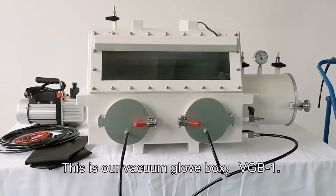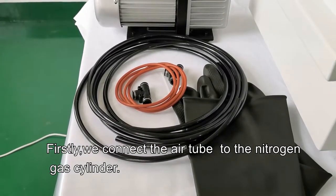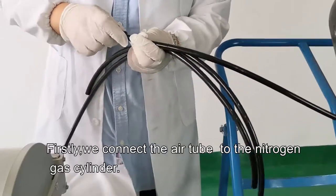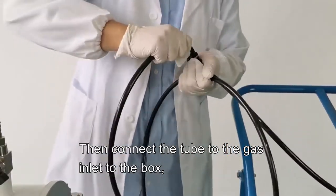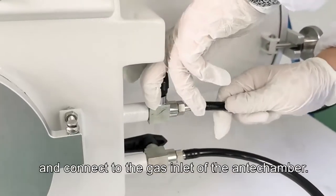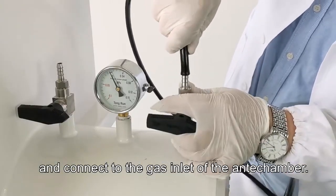This is our vacuum glove box VGB1. Firstly, we connect the air tube to the nitrogen gas cylinder. Then connect the tube to the gas inlet to the box and connect to the gas inlet of the anti-chamber.